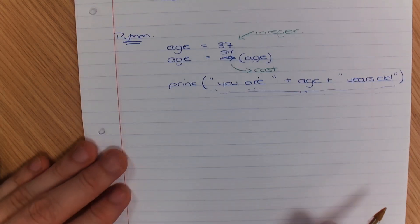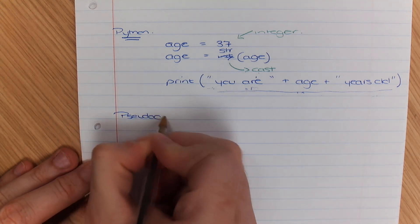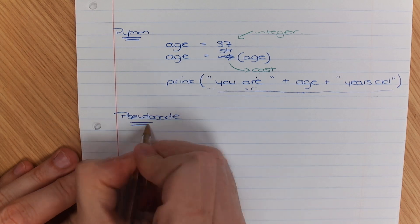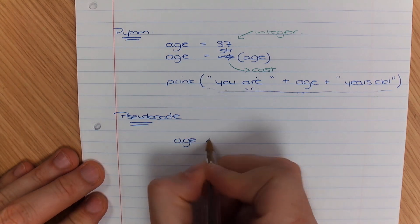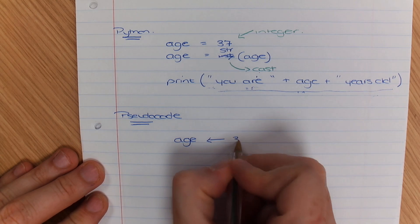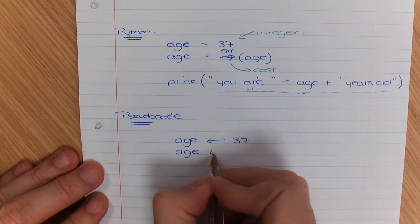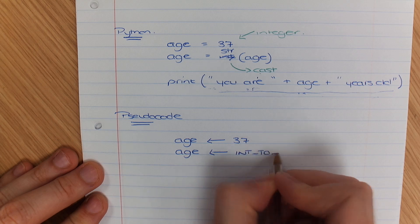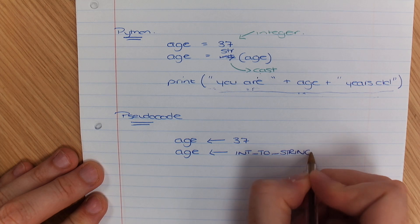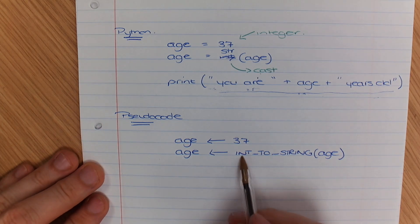Now what that looks like in pseudocode just so you've got an example. So I'm going to show you age is allocated 37. Age equals int to string and in brackets I'm going to put age.